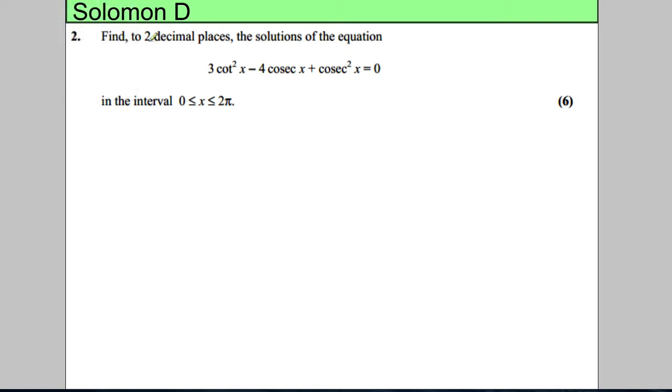In this question we're asked to find to two decimal places the solutions of the following equation: 3 cot squared x subtract 4 cosec x plus cosec squared x is equal to 0, and we want our x to be bigger than or equal to 0 and less than or equal to 2 pi, so our answer in radians.